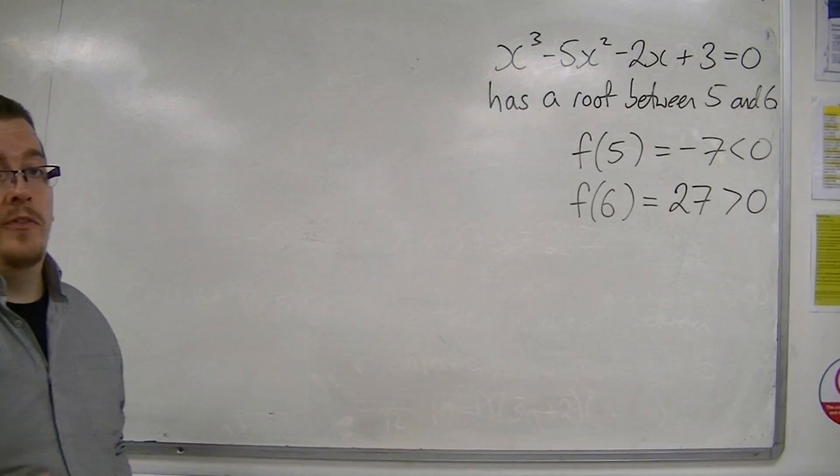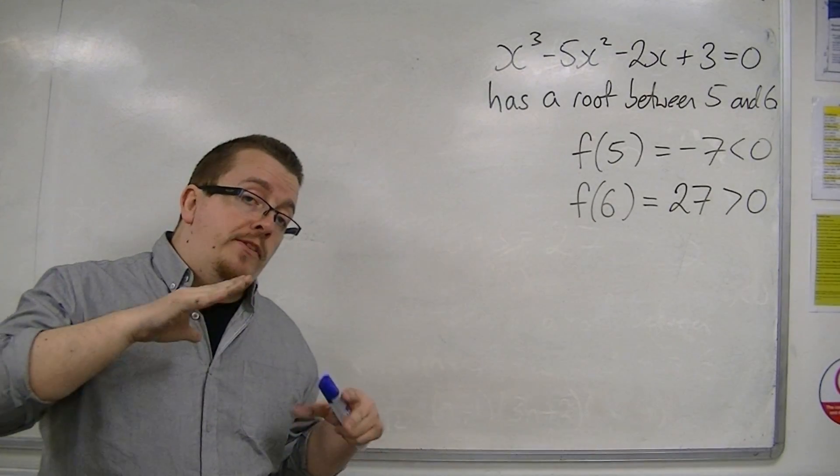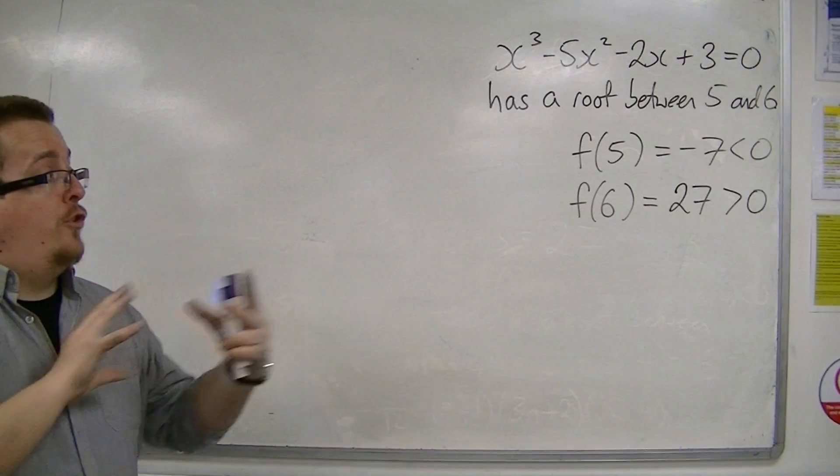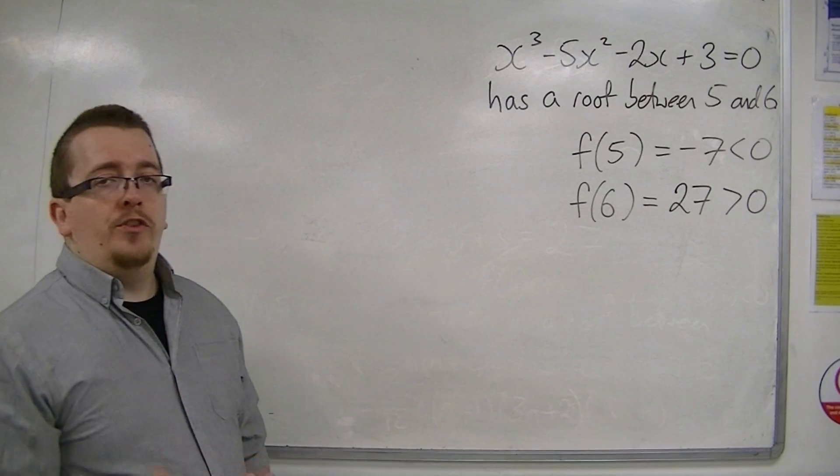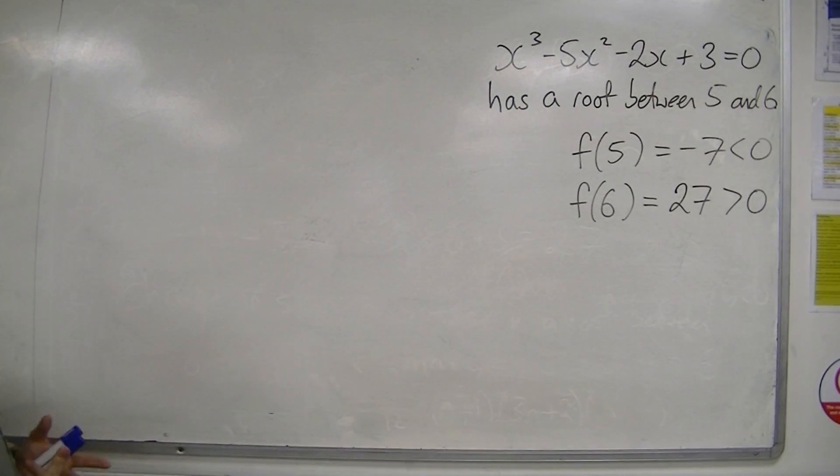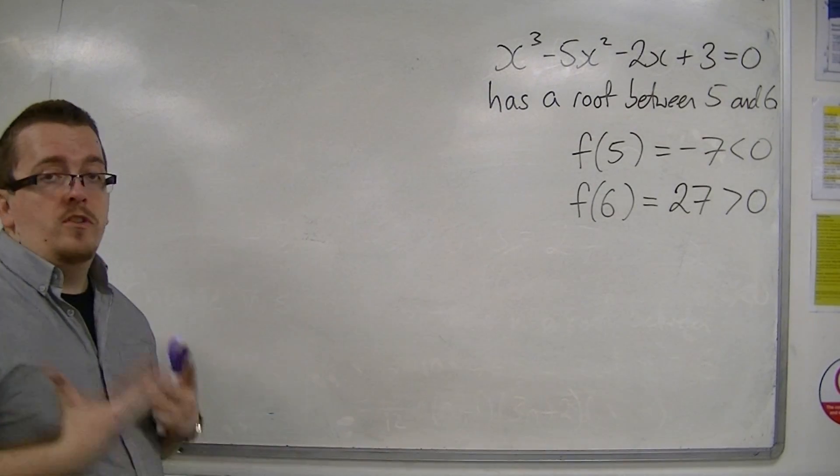One is negative and the other is positive. And because there's that change in sign, that must mean that there is a root between the two. Now we're going to use the bisection method in order to try and determine a better approximation to this root.